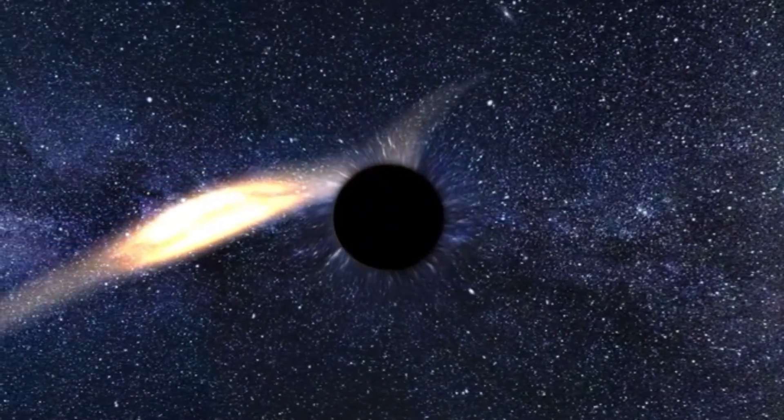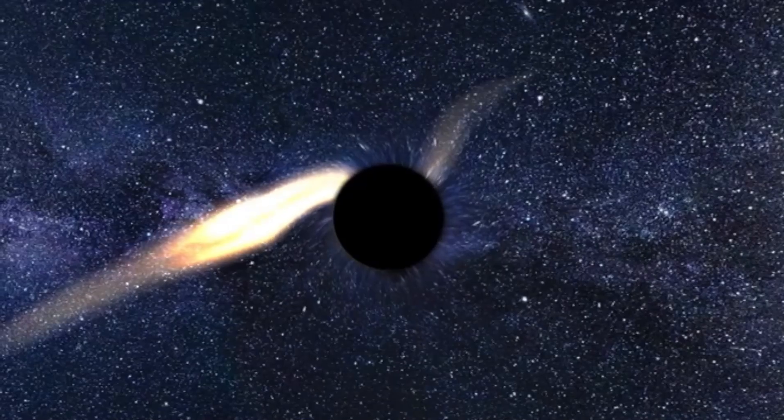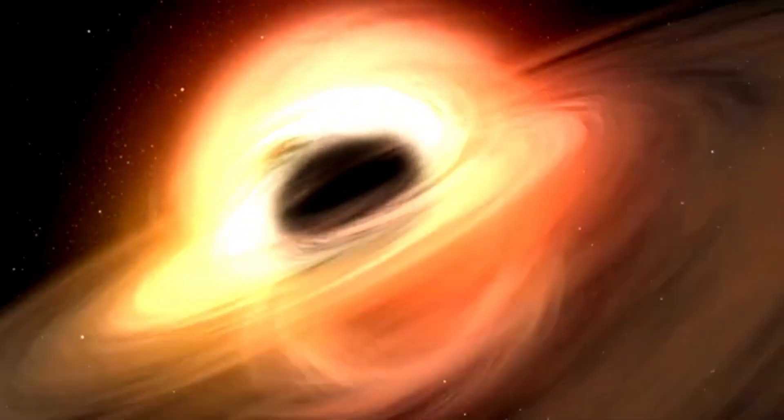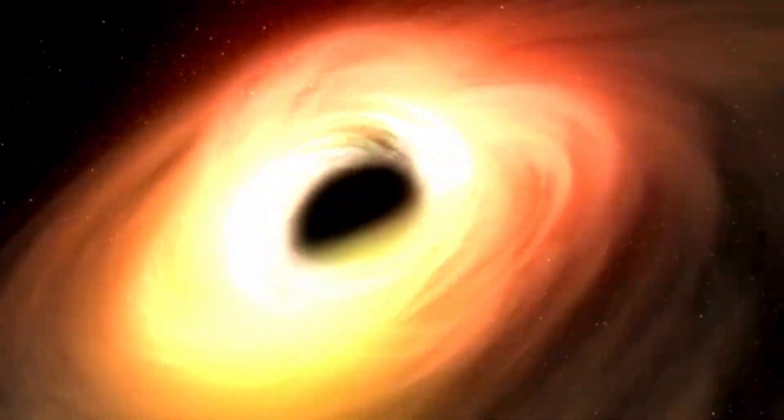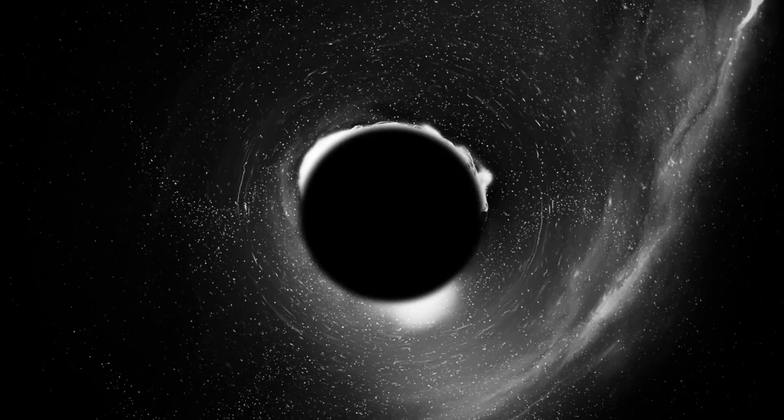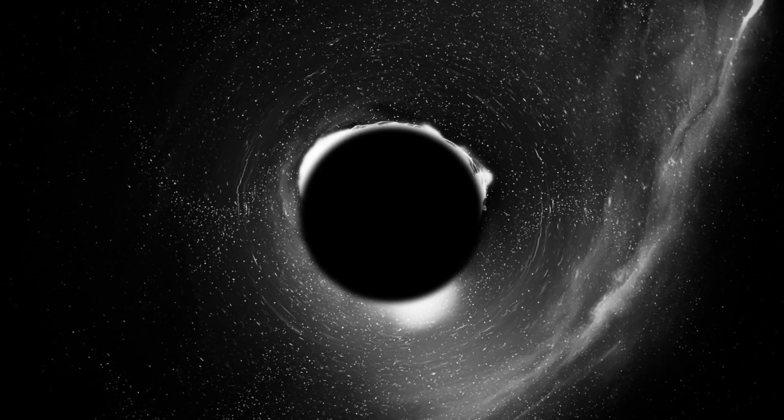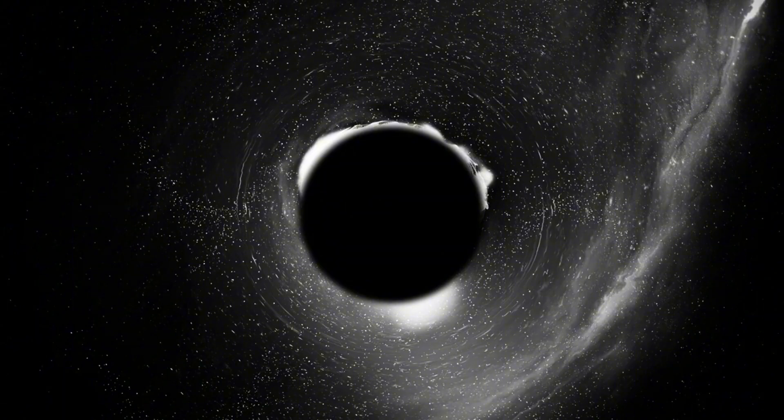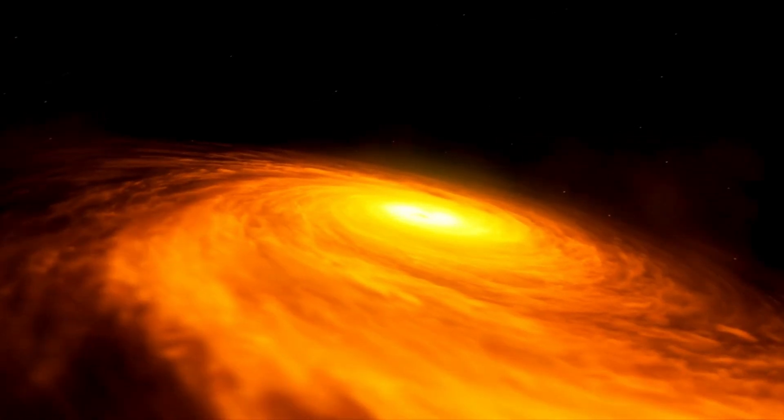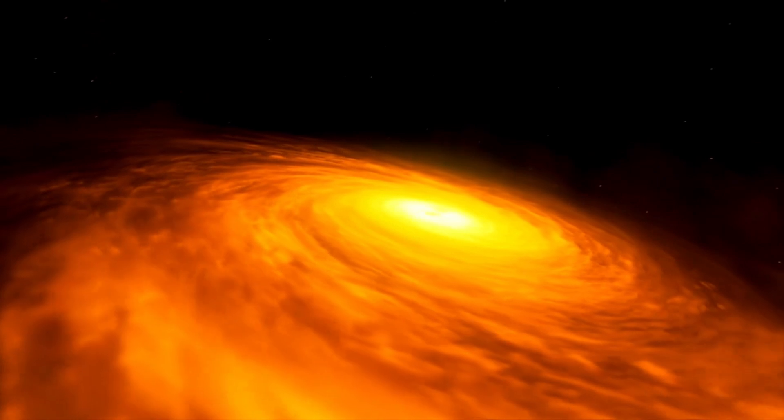The story of black holes begins in 1916 when Albert Einstein introduced his groundbreaking general theory of relativity. This theory provided a new understanding of gravity and the curvature of spacetime, ultimately predicting the existence of black holes. Although Einstein was the first to foresee the possibility of such entities, the term black hole would not be coined until 50 years later in 1967.